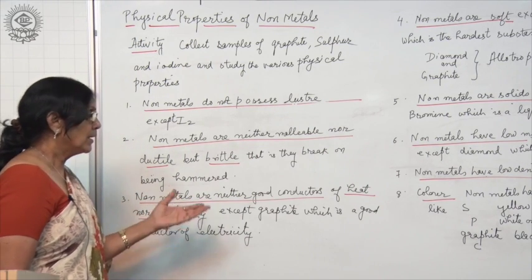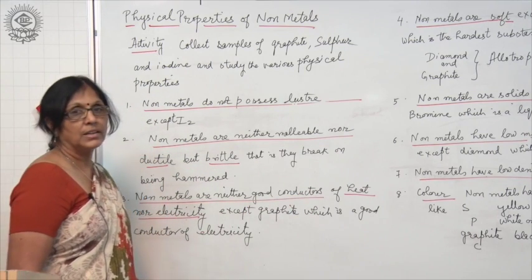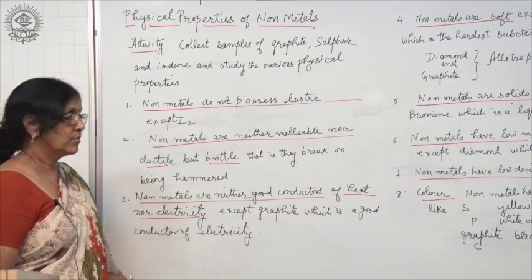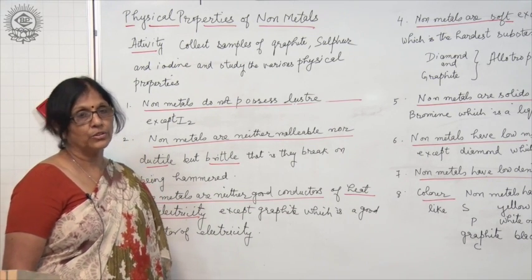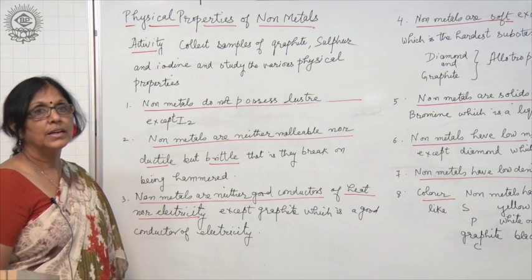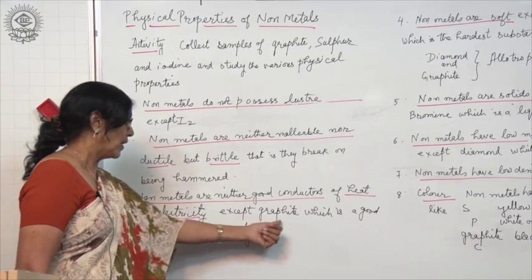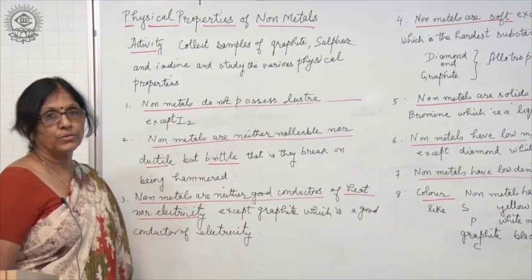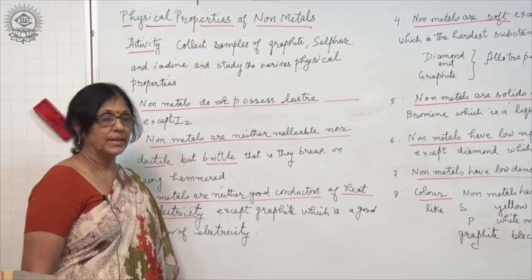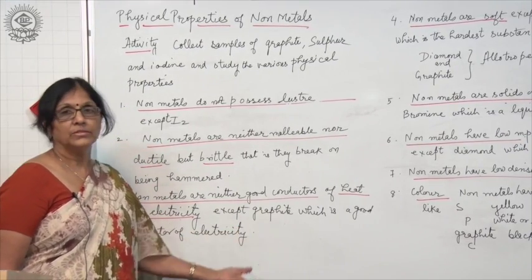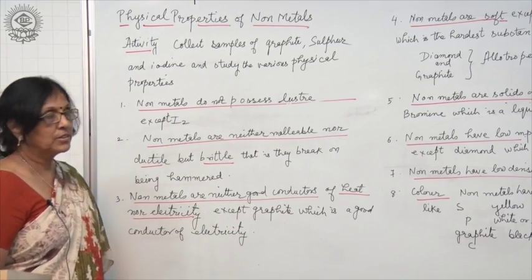Also, non-metals when tested whether they are good conductors of heat or electricity, it will be found that non-metals are neither good conductors of heat nor good conductors of electricity. But here is some exception like graphite, which is a good conductor of electricity which is used to make batteries. And graphite is carbon. So graphite conducts electricity very well.